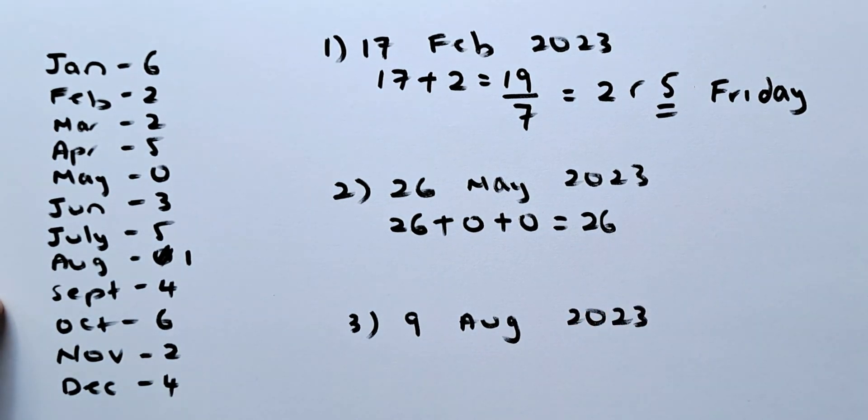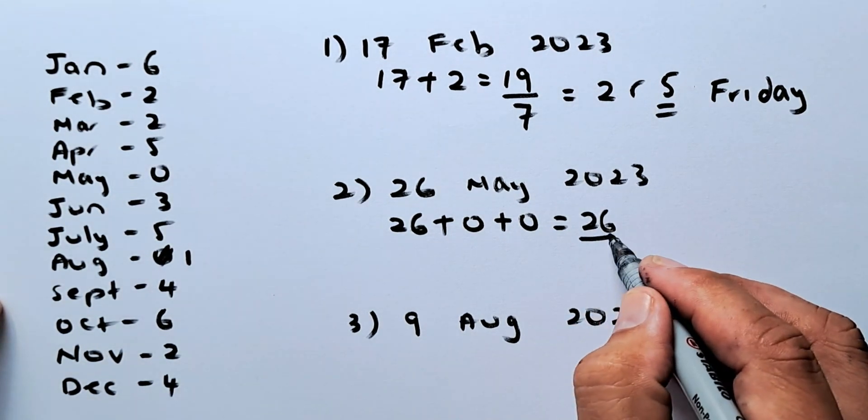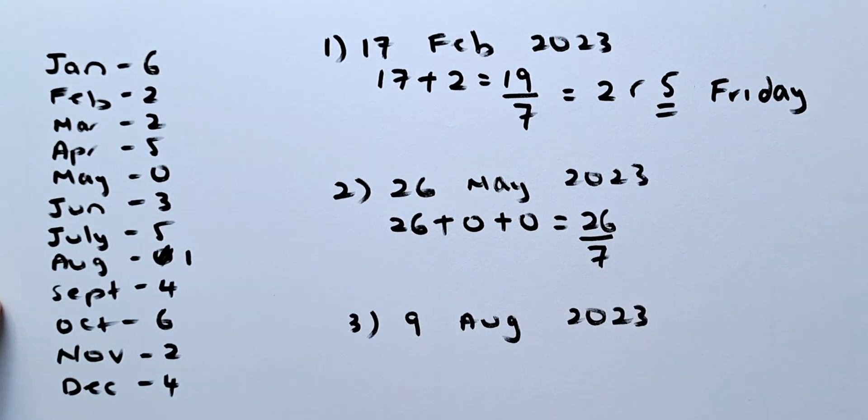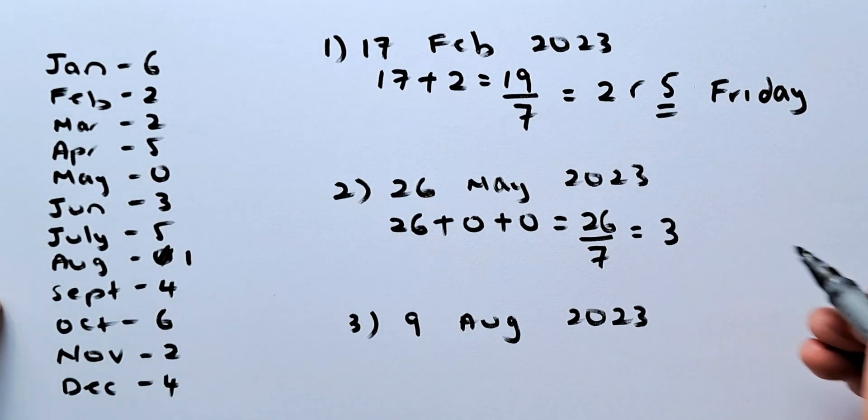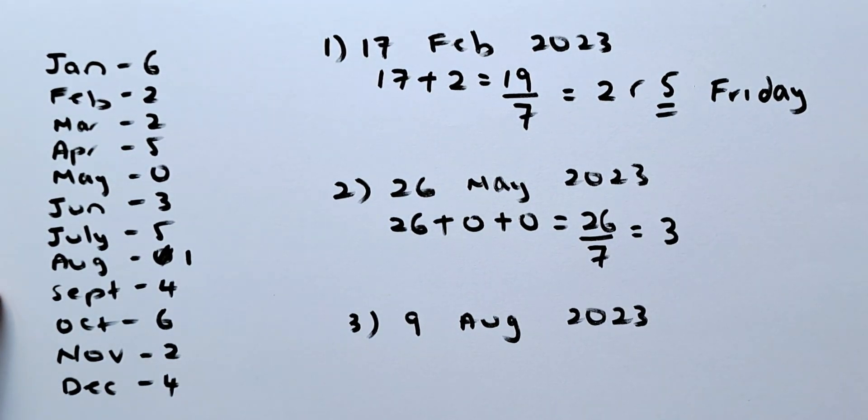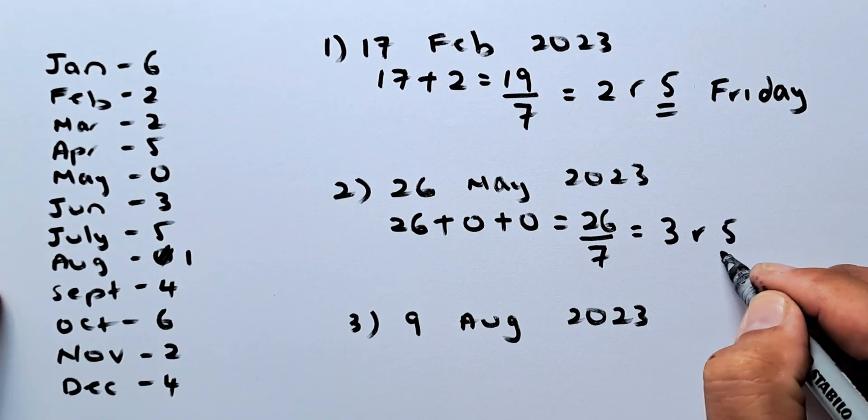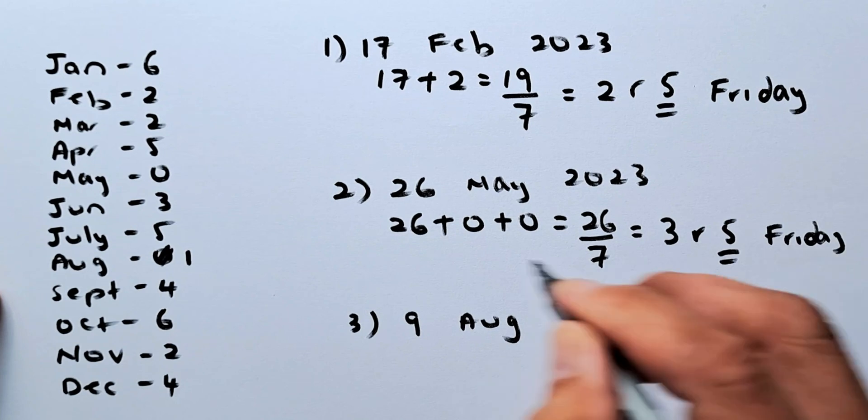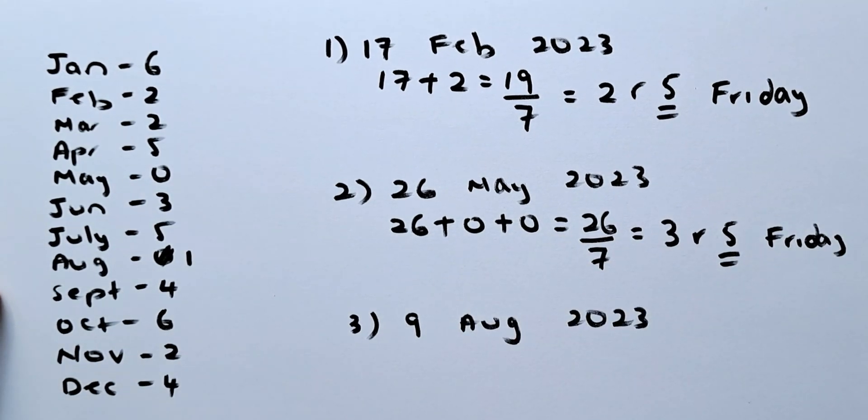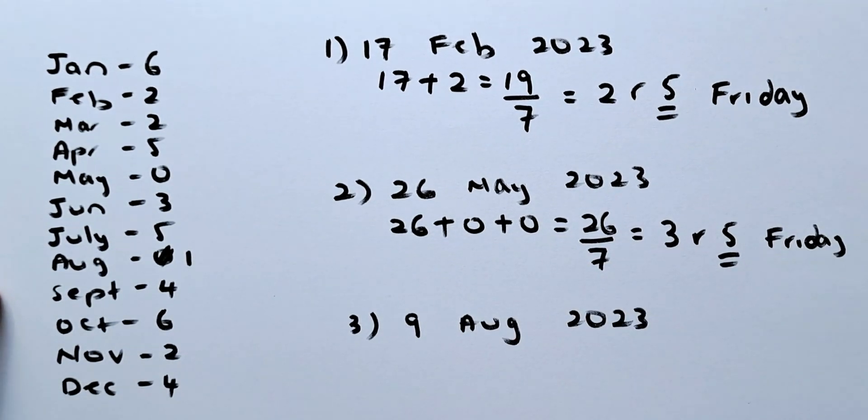Next step, what we're going to do, we are going to divide by 7. When you divide by 7, you're going to get 3. 3 times 7 is 21, remainder 5. And again, 5 is a Friday. So on the 26th of May, 2023 is again going to be a Friday.